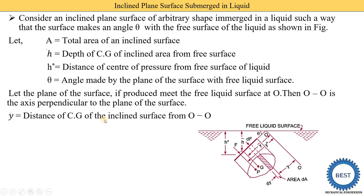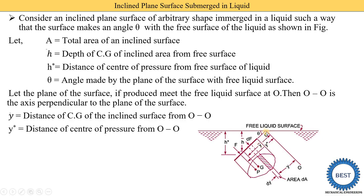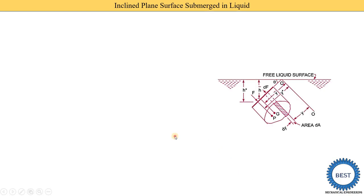Ȳ is the distance of the CG of the inclined surface from the O-O plane. From the G point to the O-O plane, the distance is called Ȳ. Similarly, H̄ is related to the G point measured vertically, while Ȳ is measured along the inclined plane from O-O to G. Y* is the distance of the center of pressure from the O-O plane — that is, the distance from the O-O plane to point P is called Y*.